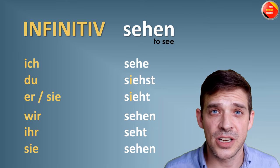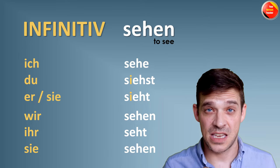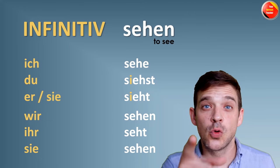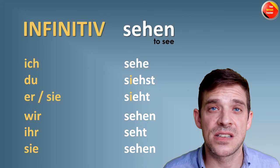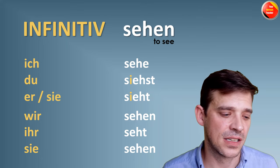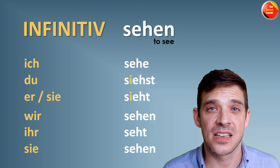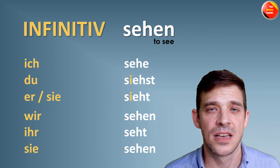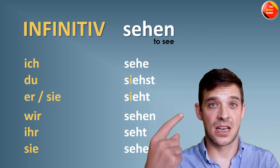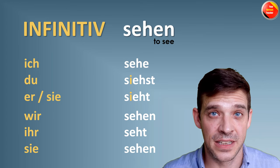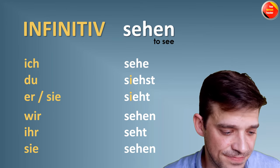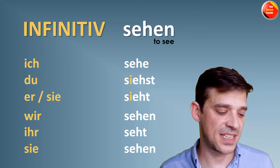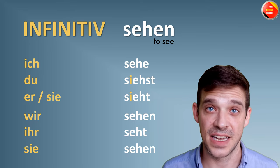Let's conjugate SEHEN together: ich sehe, du siehst, er/sie sieht, wir sehen, ihr seht, sie sehen.